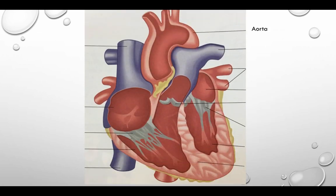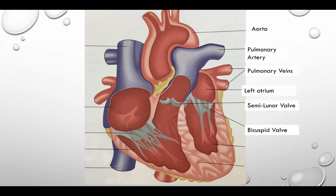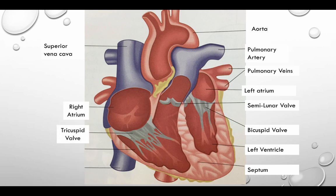Here's a diagram of the heart. These are the four or five key areas you need to know for each side of the heart. Starting on the left-hand side: the aorta, pulmonary artery, pulmonary veins, left atrium, semilunar valve, bicuspid valve, left ventricle, and the septum. On the right-hand side: superior vena cava, right atrium, tricuspid valve, right ventricle, and inferior vena cava. Within your exam you'll often get a diagram like this and be asked to label different areas of the heart. It is good to know all of them.